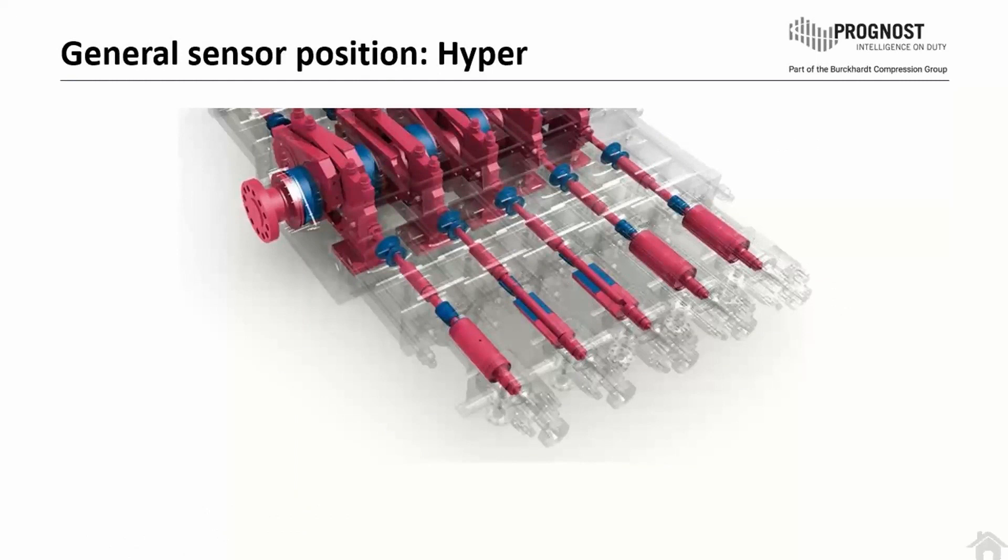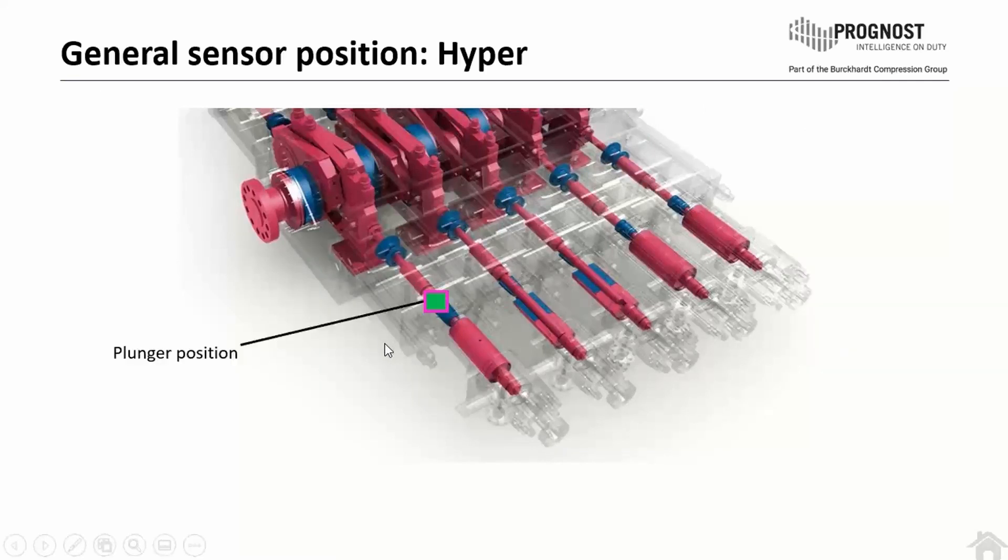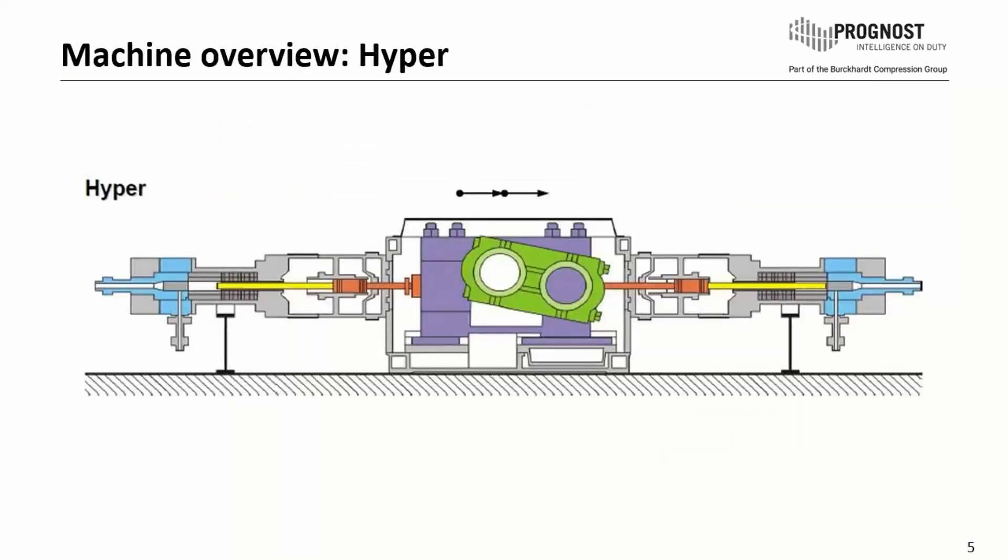Which sensors are located on the hyper compressor? We have the trigger, which is very important for our monitoring system. We also have frame vibration, crosshead vibration, cylinder vibration, and dynamic pressure sensors. In case of a hyper compressor, it's the DMS rings, but in our case we'll have a special look at the plunger position monitored with the proximity sensor.